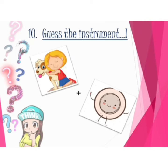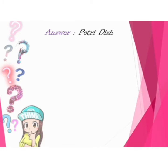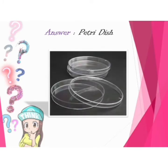Can you guess this instrument? It is a petri dish. It is a shallow transparent dish that biologists use to culture cells such as bacteria and fungi.